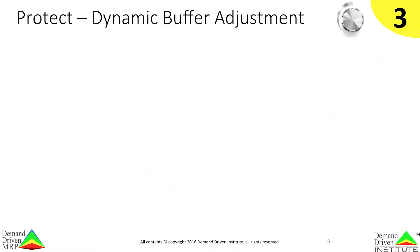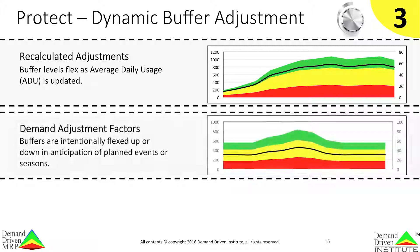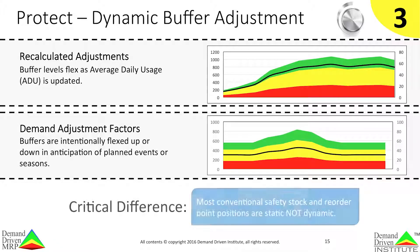Since safety stock doesn't decouple, at best it can be characterized as a series of fire extinguishers, when companies and supply chains really need strategically placed and managed firewalls. The next DDMRP component is dynamic buffer adjustment. Once initial buffer sizes are set, DDMRP allows the buffers to flex up or down with either changes to actual usage or in anticipation of events or seasons. Most safety stock and order point systems are static, not dynamic.